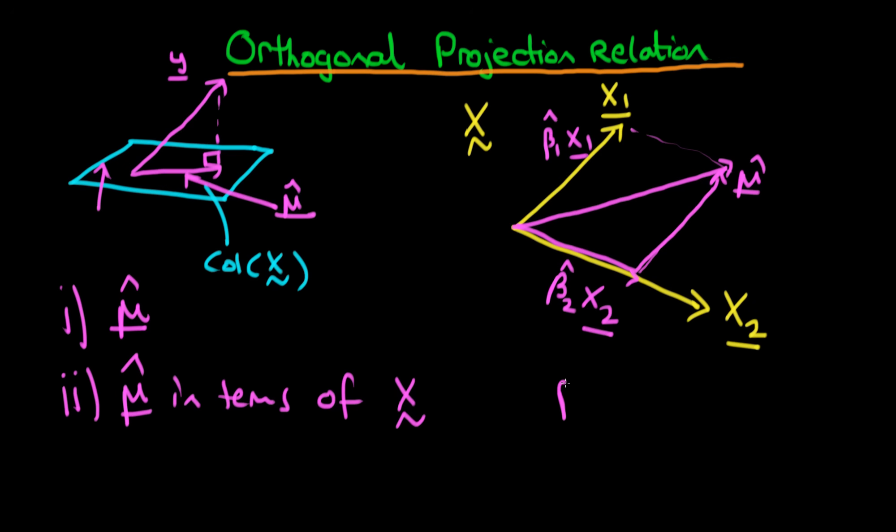Hence, we can think about mu hat as being equal to beta 1 hat times X1 plus beta 2 hat times X2, where X1 and X2 in this example are the column vectors of those two particular independent variables.